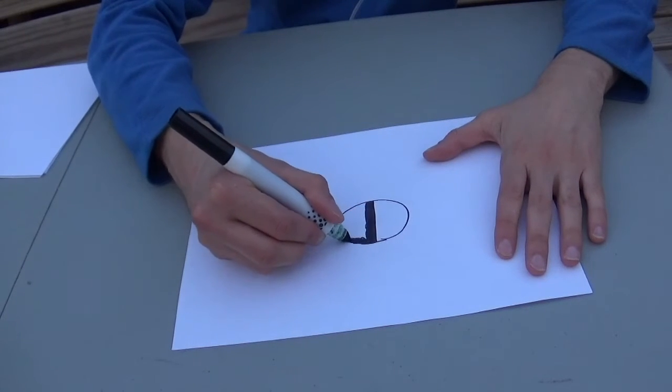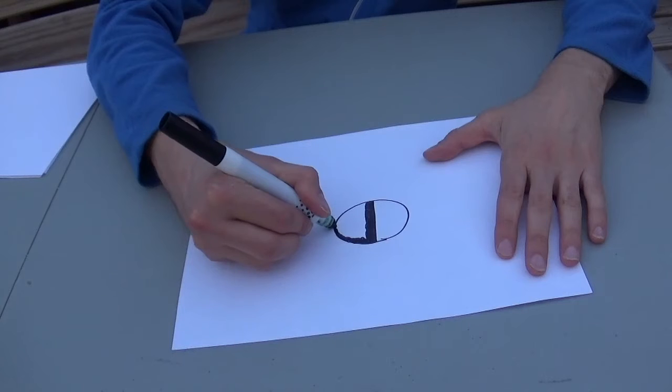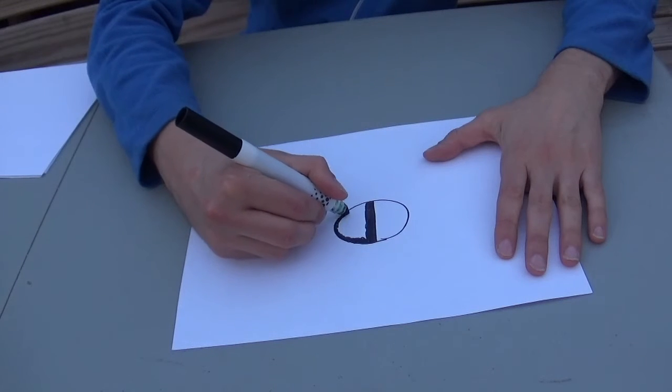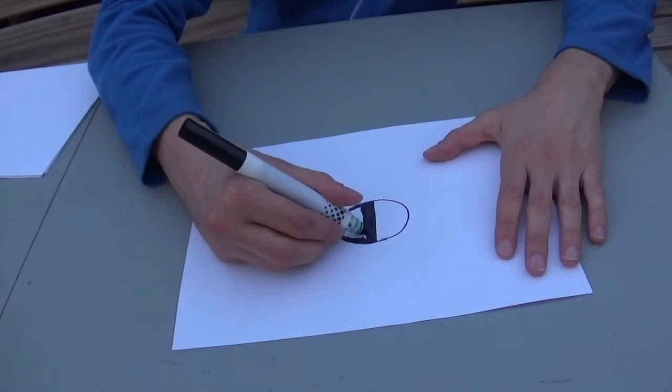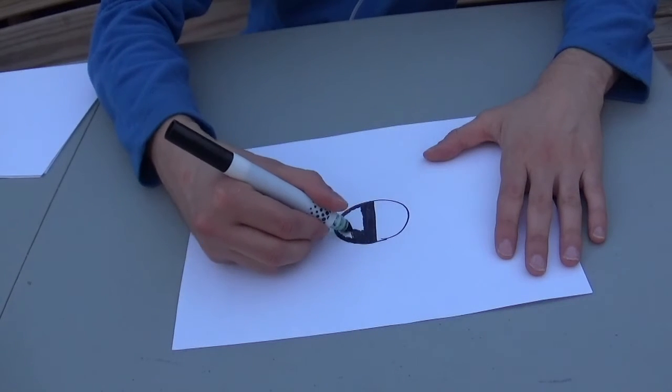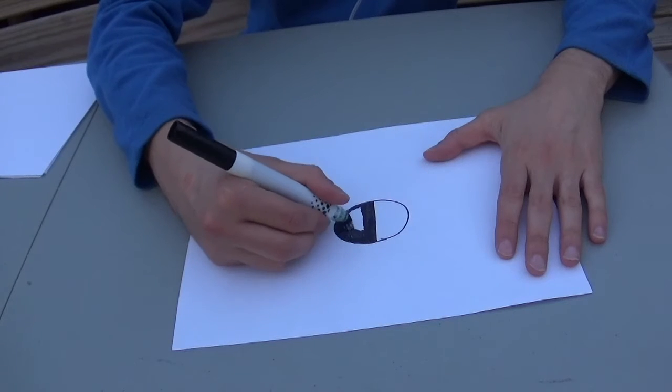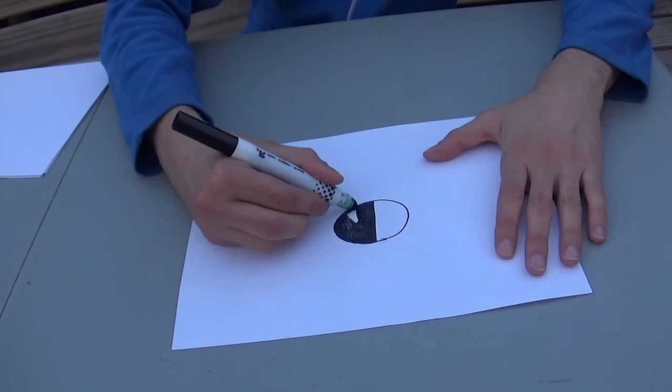Once we have the moon drawn, we're going to draw some radiating lines out from the center of the moon. I'm going to do it on roughly half of my paper first, so that on the other half, I can imitate it. I'll do that in a second once I'm done coloring in this moon.